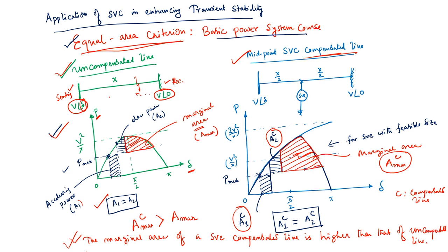Without any fault, suppose this is the operating condition represented by delta_1. At this operating point, the mechanical power P_mech equals the electrical power represented by this characteristic. When a fault occurs, the electrical power drops to 0 while mechanical power continues at its original value, causing the machine to increase in speed. When the fault is cleared at delta_2, the electrical power is restored.